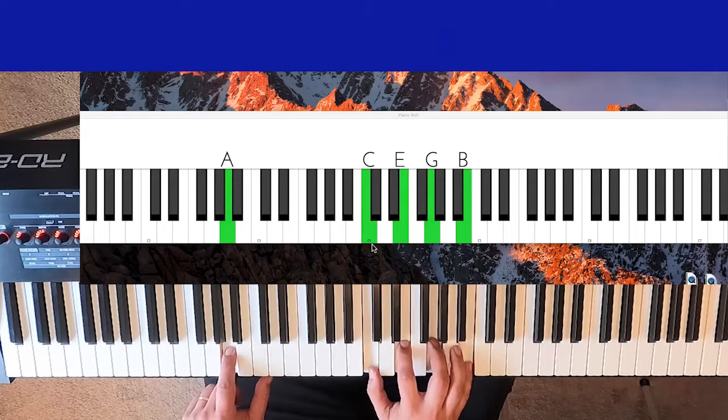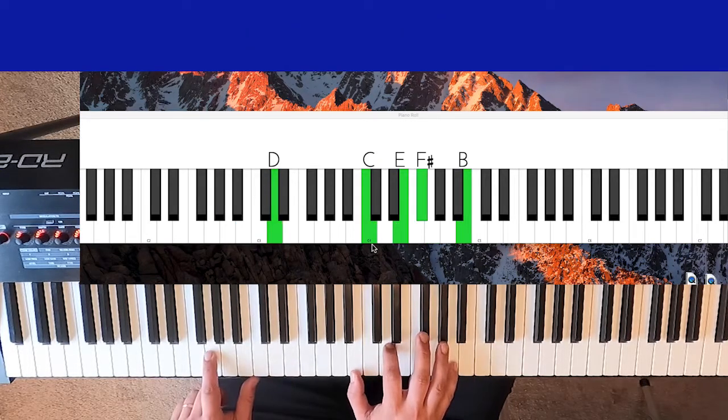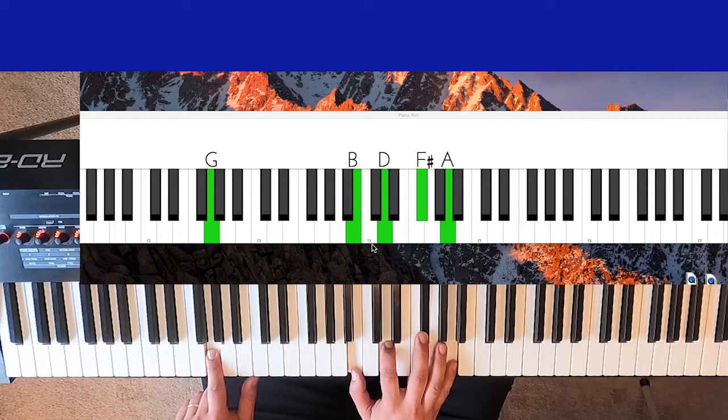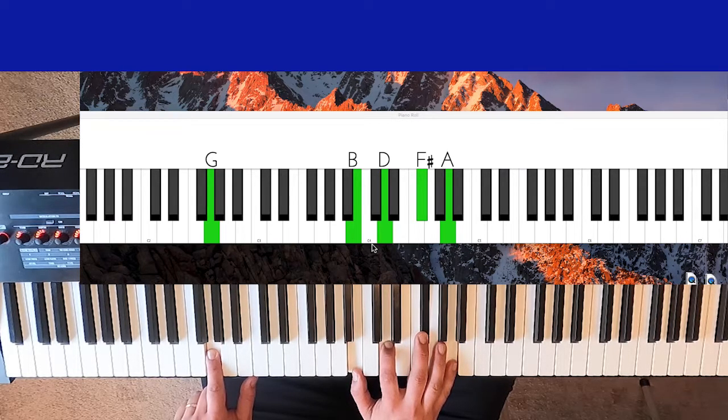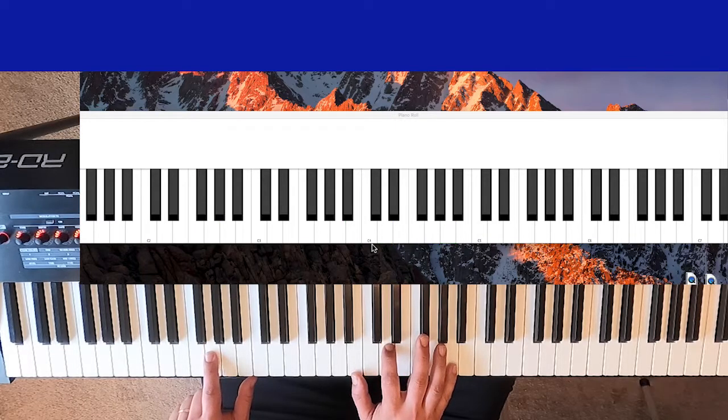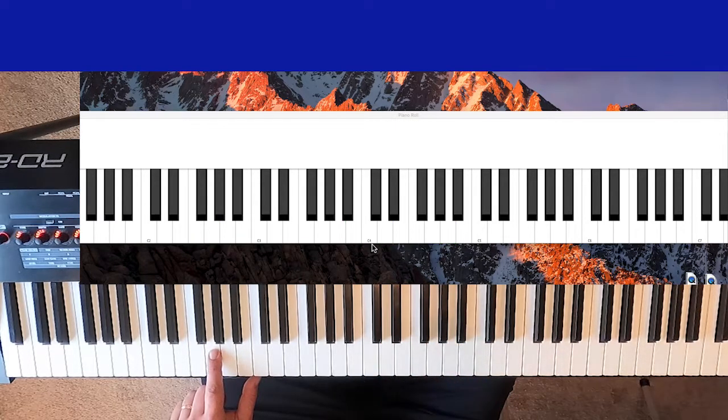So going back to our two, five, one progression. That's what it's going to look like. And that's a two, five, one in the key of G. We're going to do a two, five, one in the key of F as we continue around the circle of fifths.